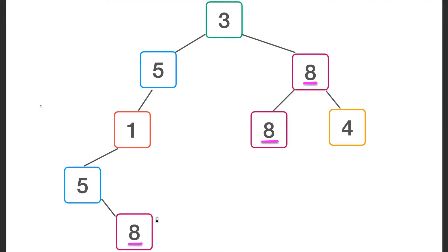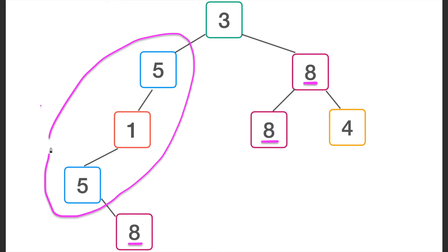We can also observe that if we consider a sub-tree of the main tree, its maximum might be 5. If 5 is the maximum of that sub-tree, then a path between two nodes with value 5 within that sub-tree is also a good path. So the idea is: consider sub-trees, get their maximums, and use those maximums to find good paths.